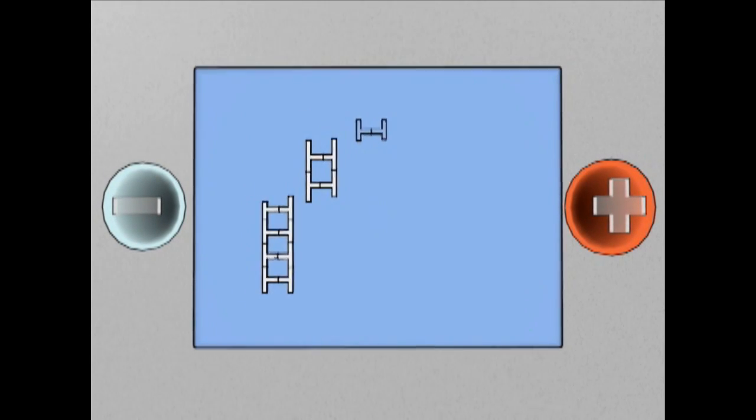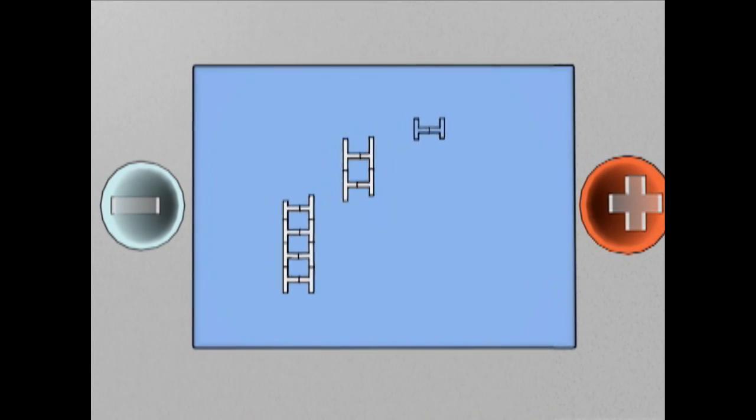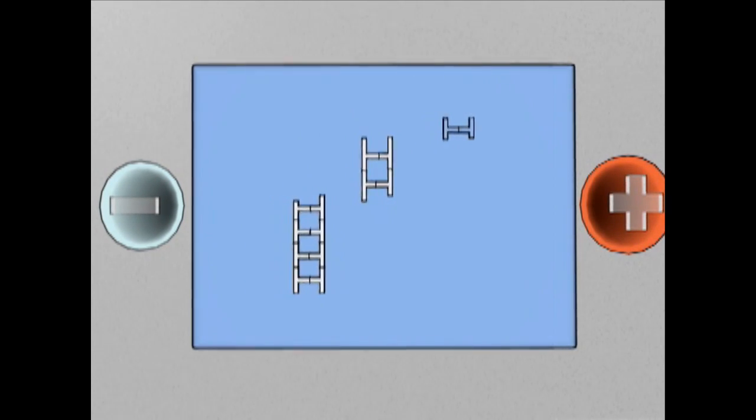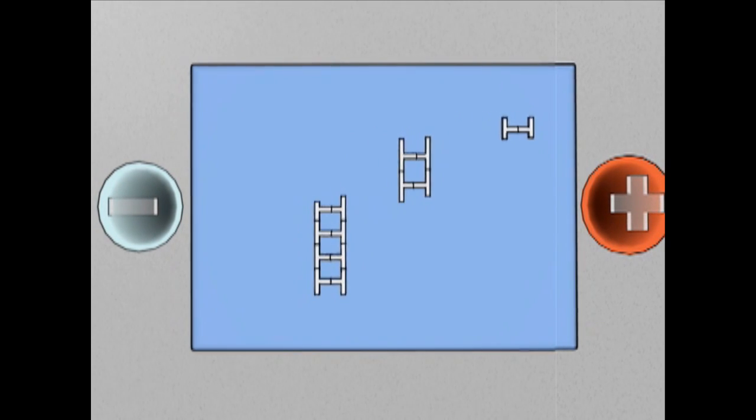Therefore, if the electric field is applied for a given amount of time, the molecules will arrange themselves by size on the tray. Those closest to the positive electrode are the smallest, and those farthest away are the largest.